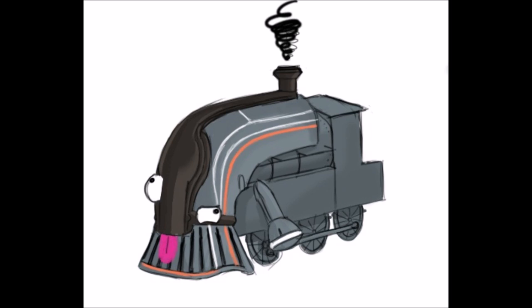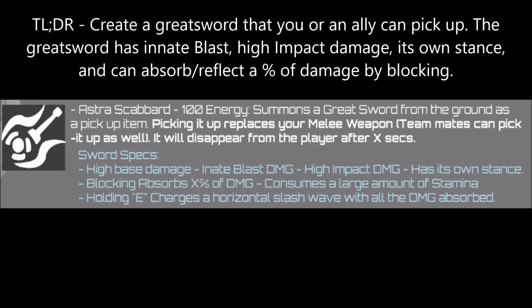Pollux's fourth and signature ability is Astra Scabbard. Upon activation, Pollux summons a great sword which can be picked up by himself or an ally. Once picked up, the great sword will replace the previously equipped melee weapon for a specific amount of time. In addition, the great sword comes with high impact damage and innate blast damage, as well as its own stance.